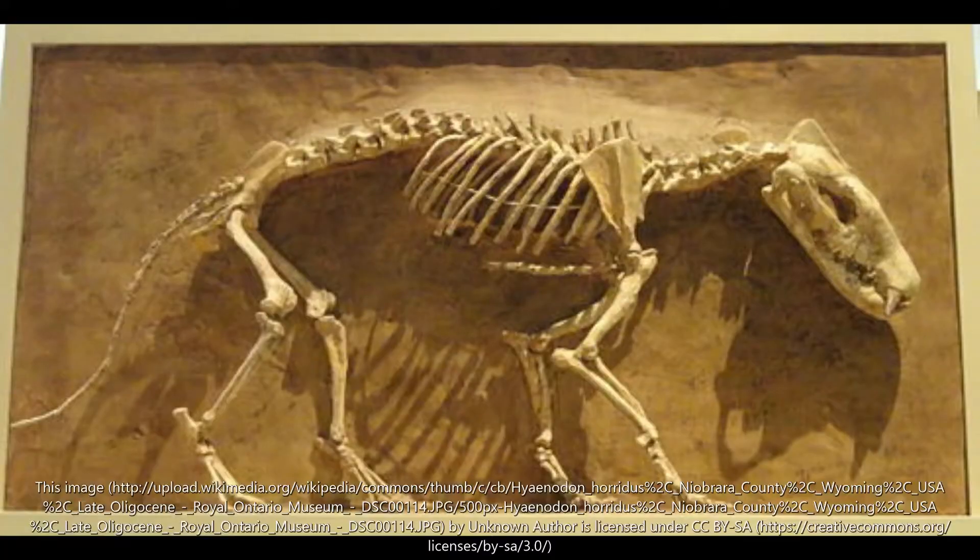Some evidence we have for evolution — we're going to focus on four main things: fossils, embryos, homologous structures, and DNA. Fossils are the remains of organisms that previously lived a long time ago. Scientists can see the structures of ancient organisms, which provides clues about how they lived, what kind of environment they lived in, and how they evolved.